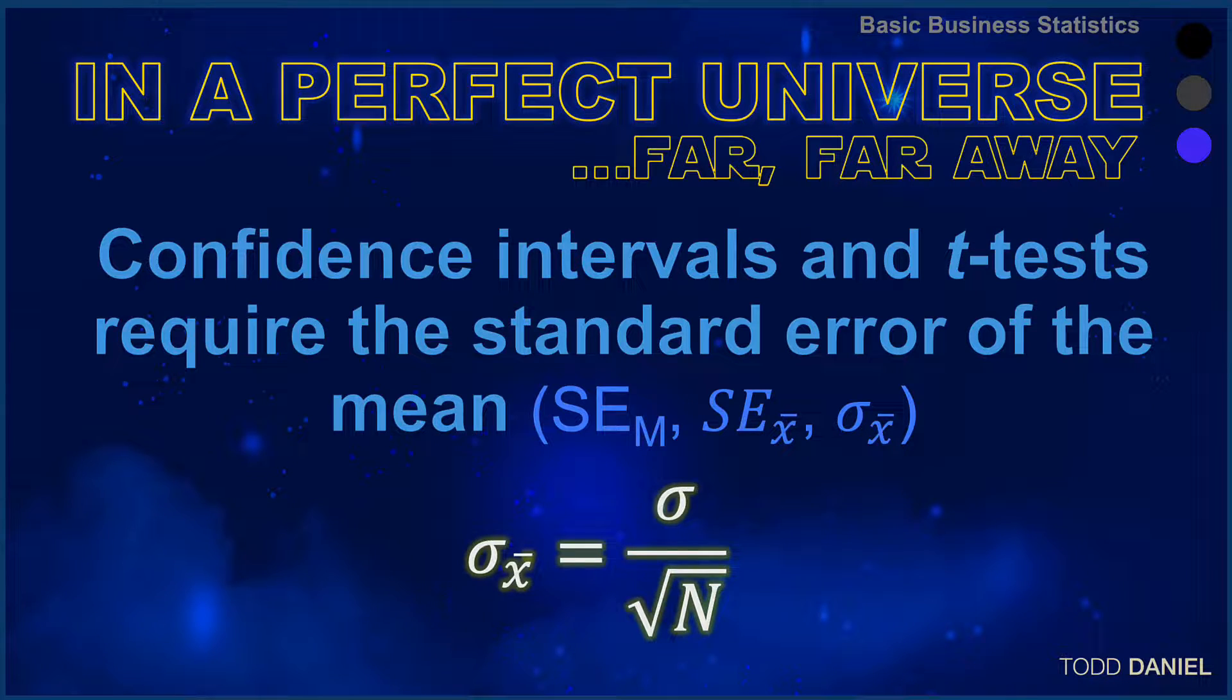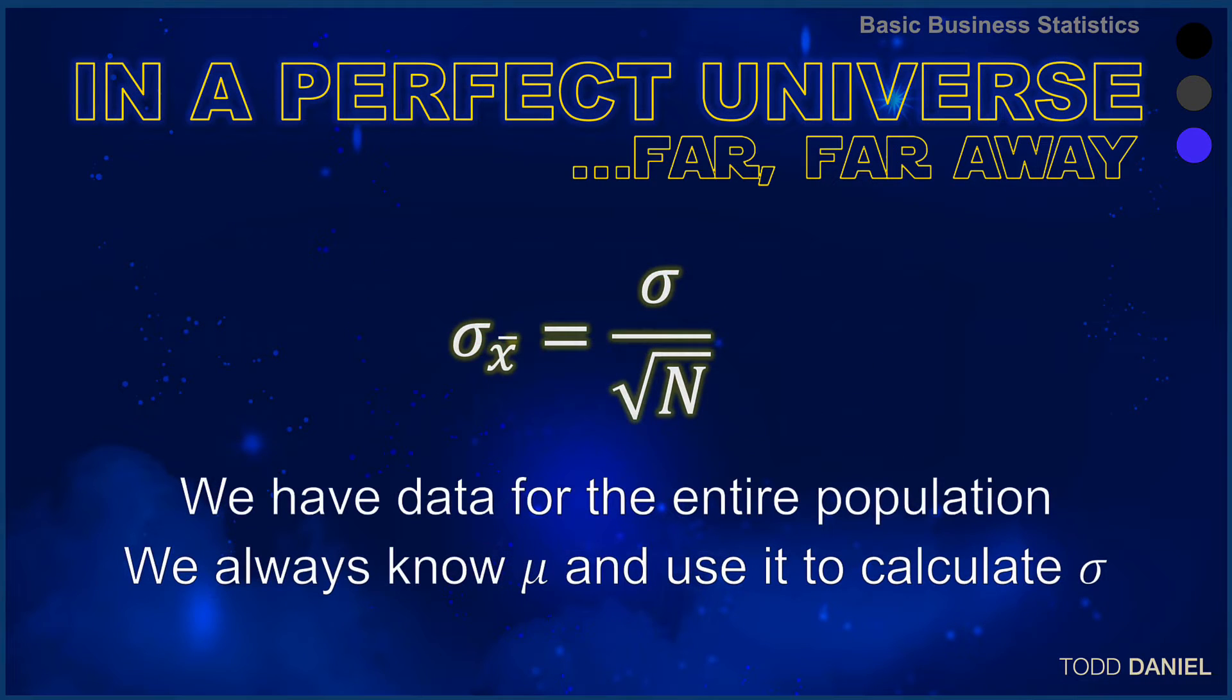Confidence intervals and t-tests require the standard error of the mean. The formula for standard error of the mean is sigma divided by the square root of the sample size. In a perfect universe, we would have perfect knowledge. We have data for the entire population. We always know the population mean, and we could use it to directly calculate the population standard deviation.